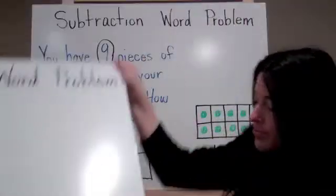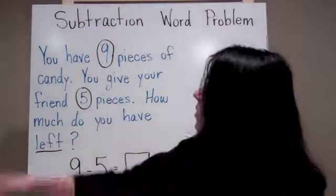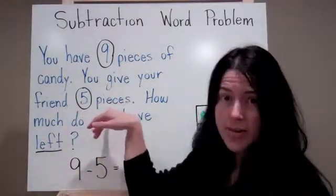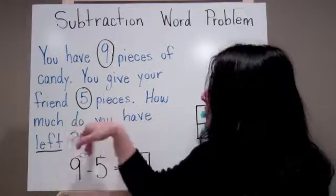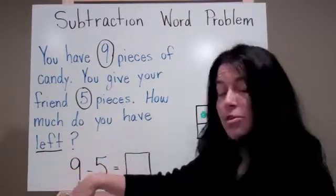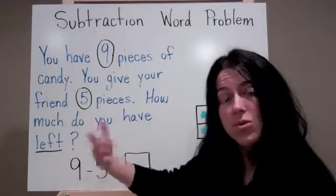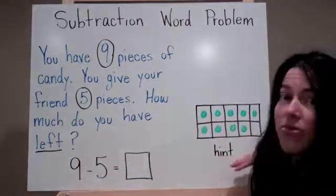Now it's your turn. You have 9 pieces of candy. You give your friend 5 pieces. How much do you have left? So the problem that you are solving is 9 take away 5 equals what?